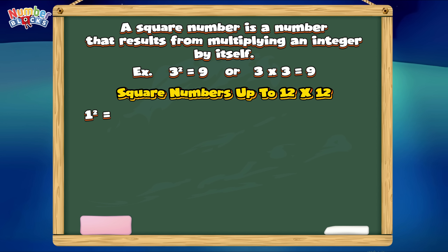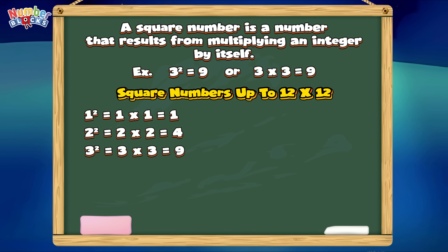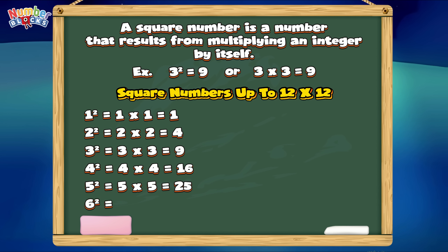One square, or one times one, is equals to one. Two square, or two times two, is equals to four. Three square, or three times three, is equals to nine. Four square, or four times four, is equals to sixteen. Five square, or five times five, is equals to twenty-five. Six square, or six times six, is equals to thirty-six.